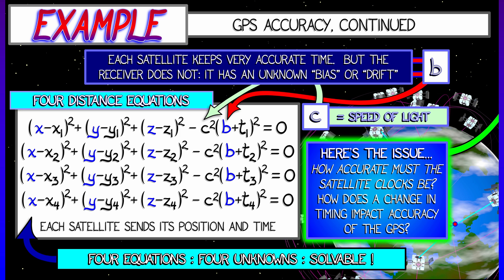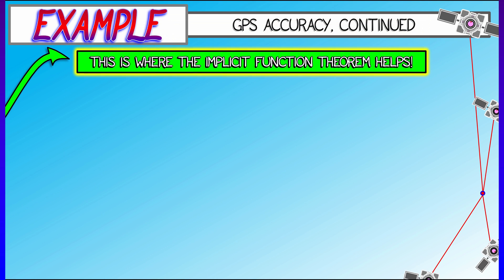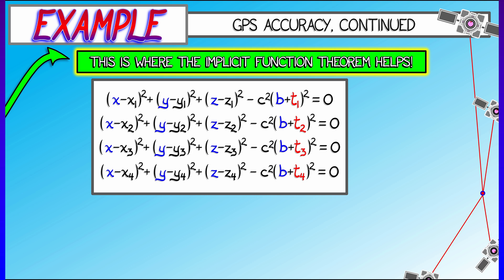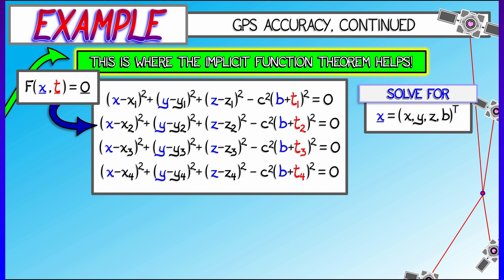Here's the issue: what's the accuracy? We know how accurate the clocks on the satellites are. How does a little error, a little inaccuracy there, change the accuracy of the physical estimation in the GPS? Okay, so we have this system, four equations, four unknowns, and I'm going to think of this as my system f in terms of x variables and t variables.